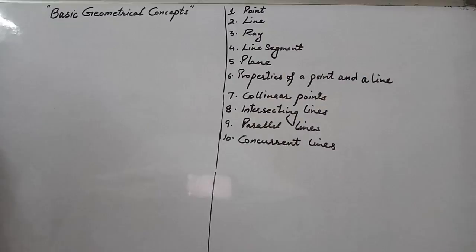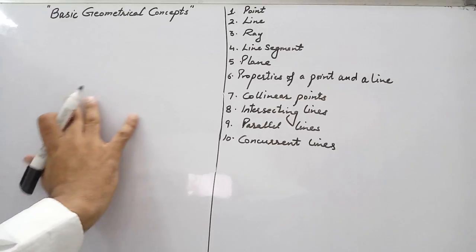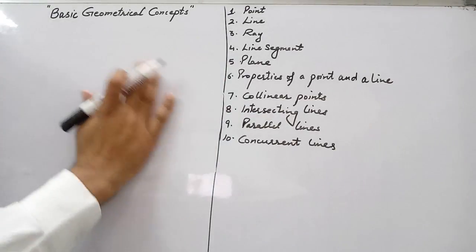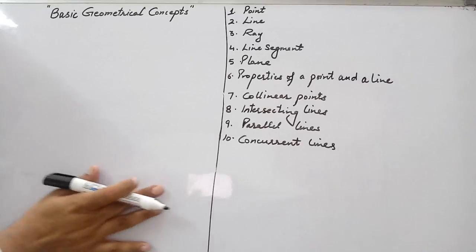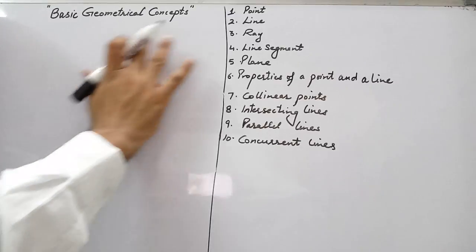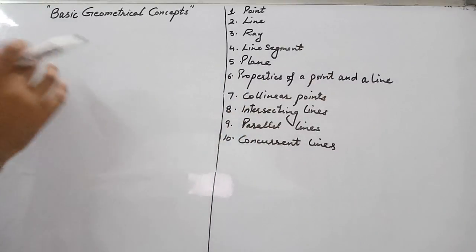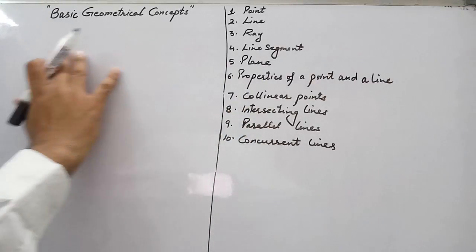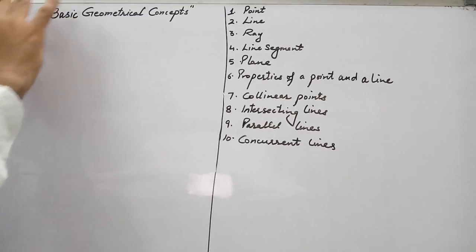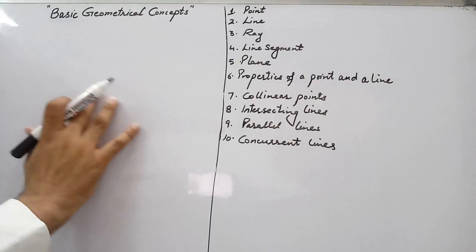Next is plane. This whiteboard surface is a plane. A plane is a flat surface which extends endlessly in all the directions. For example, you can take the surface of the whiteboard, the surface of the wall, or the surface of the tabletop. These all are plane surfaces.